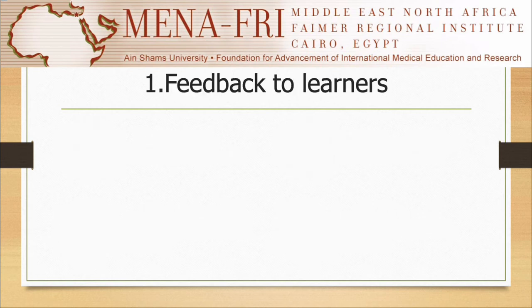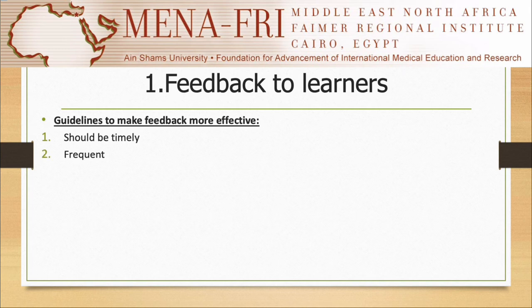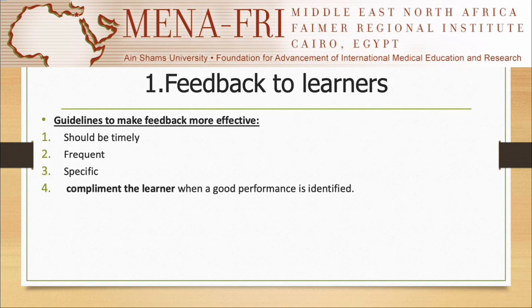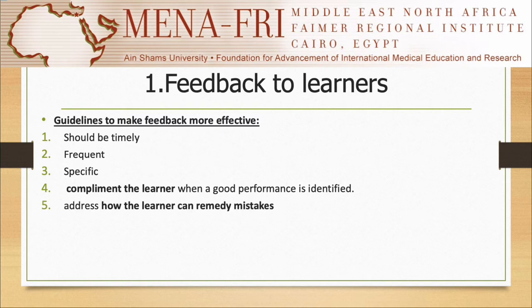Providing feedback is critical for the educational experience. The feedback provided should be effective. Some guidelines on how to make feedback effective: it should be timely, frequent, and specific. It should not be limited only to when the student is not performing well — you should also complement the learner when good performance is identified and show them how to address and remedy mistakes. Feedback should be a two-way process, not a unidirectional one, with an active conversation between teacher and learner.